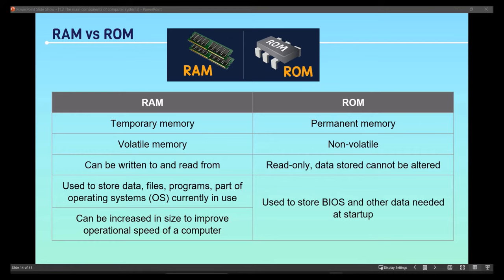The most common internal devices are RAM and ROM. RAM is temporary (volatile) while ROM is permanent (non-volatile). If a keyword says permanent, it refers to ROM; if temporary, it refers to RAM. ROM can only be read — its content cannot be altered. RAM can be both written to and read from, and it can be increased in size to improve overall task performance.